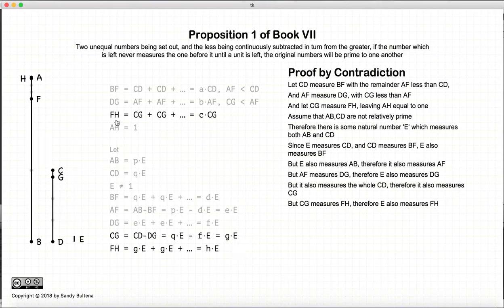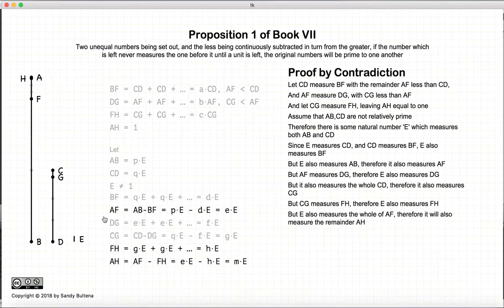And again, we get that FH is measured by E, since CG measures FH, and therefore AH, which is AF, which is measured by E, minus FH, which is measured by E, is also measured by E. So all of this, here is the crux, we have that AH is measured by E.